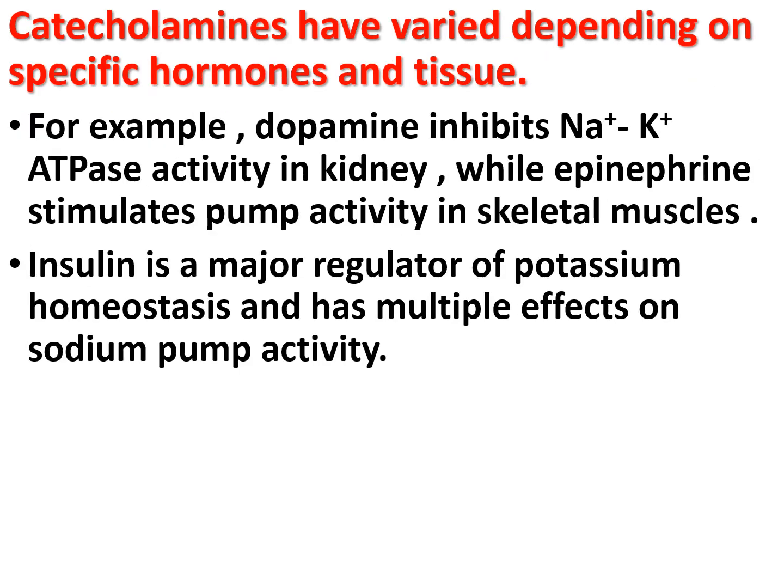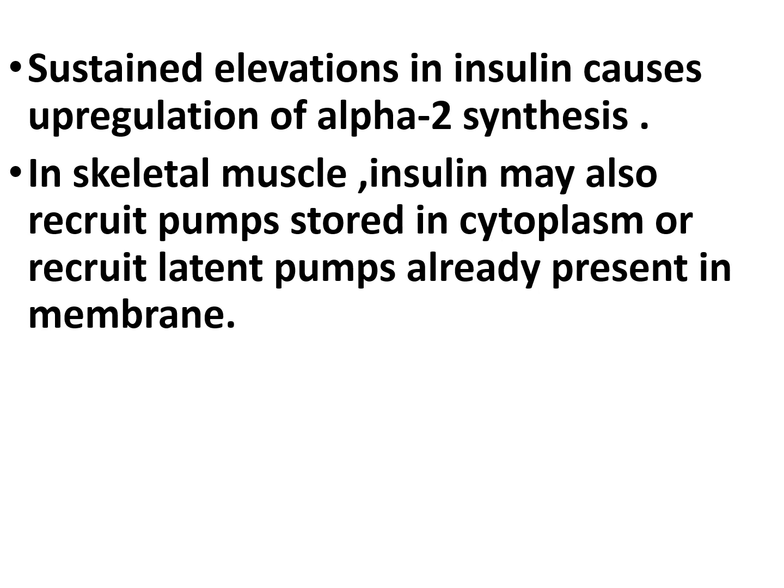Catecholamines have varied effects depending on the specific hormone and tissue. For example, dopamine inhibits sodium-potassium ATPase activity in the kidney, while epinephrine stimulates pump activity in skeletal muscle. These effects appear to be mediated via phosphorylation or dephosphorylation of the pump. Insulin is a major regulator of potassium homeostasis and has multiple effects on sodium pump activity. Within minutes of elevated insulin secretion, pumps containing alpha-1 and alpha-2 isoforms show increased affinity for sodium and increased turnover rate. Sustained insulin elevation causes upregulation of alpha-2 synthesis and may recruit pumps from the cytoplasm.